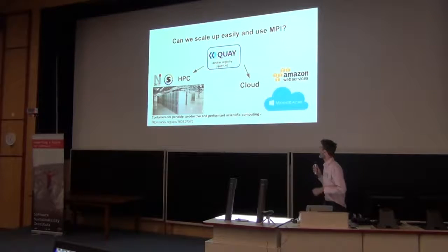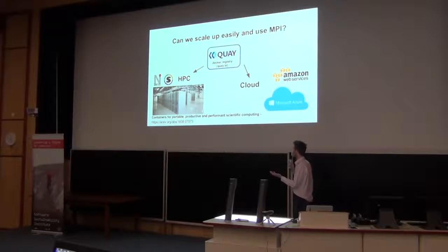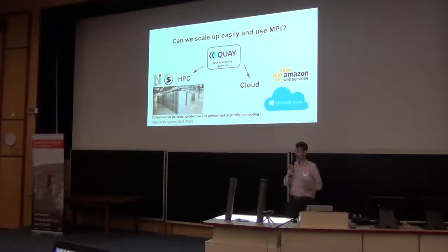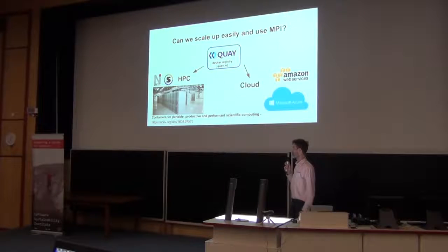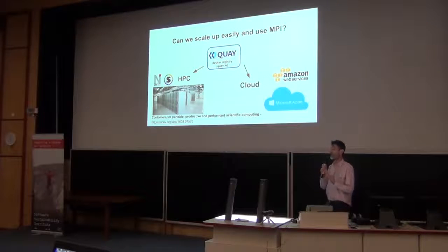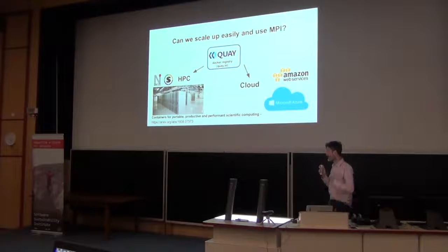Next question: now we've got these Docker containers, can we scale up and use them at large scale? Because we're doing big engineering and scientific problems, they generally don't fit into the memory of one machine. So quite often we'd really like to run with MPI in parallel and run them across lots of cores and lots of nodes as well.